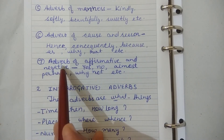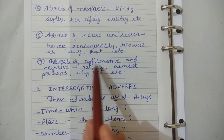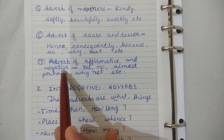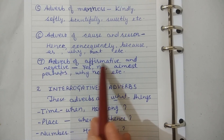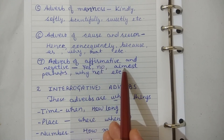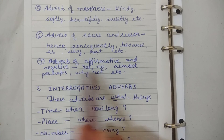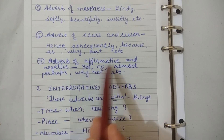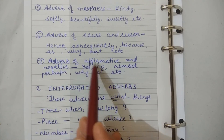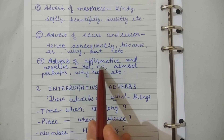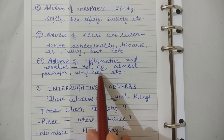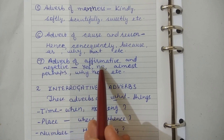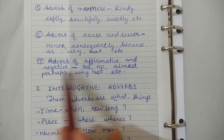Next is our adverb of affirmative and negative. Affirmative means a simple thing — almost, perhaps. Perhaps means it is in the form of yes. Simple thing: yes. Negative: no. These are examples of adverb of affirmative and negative.